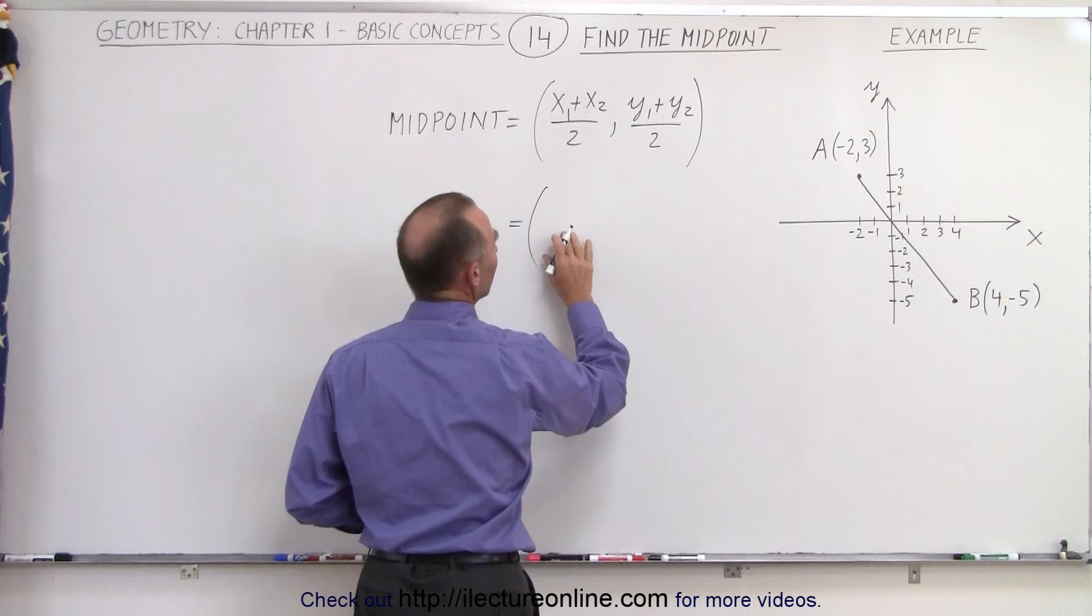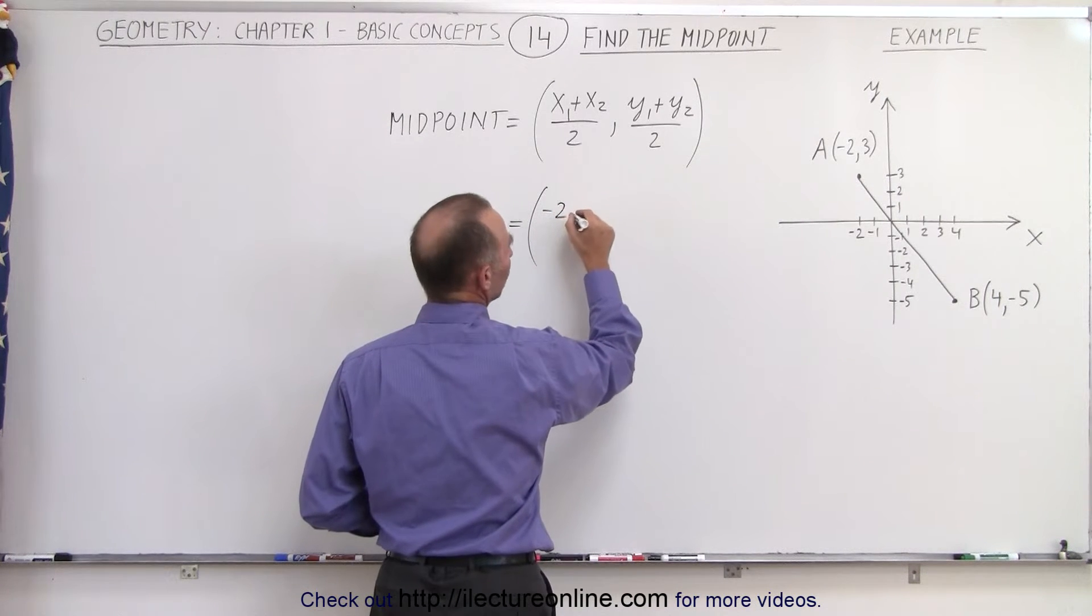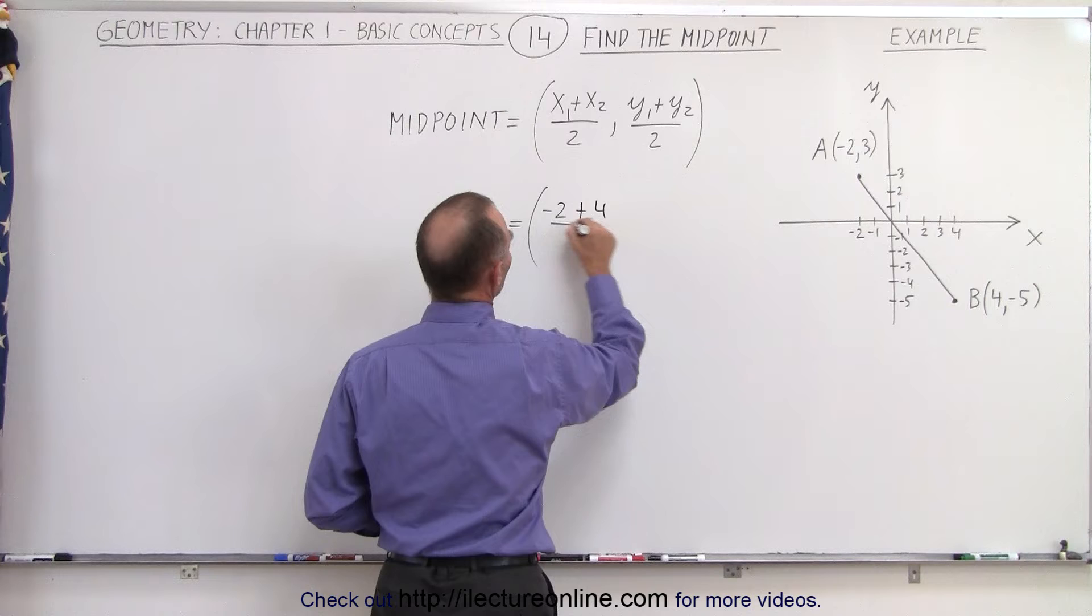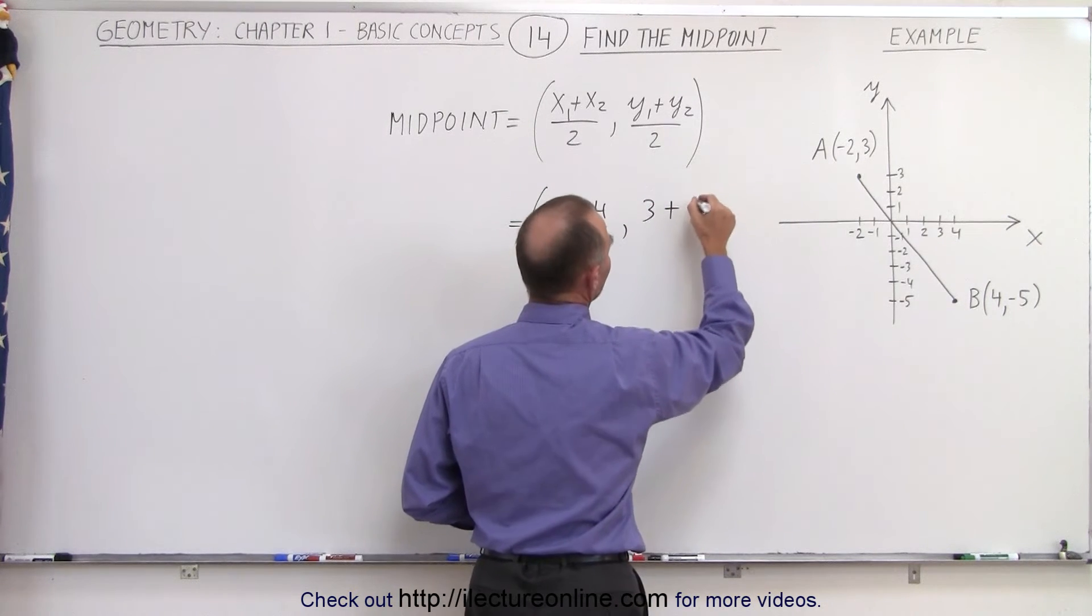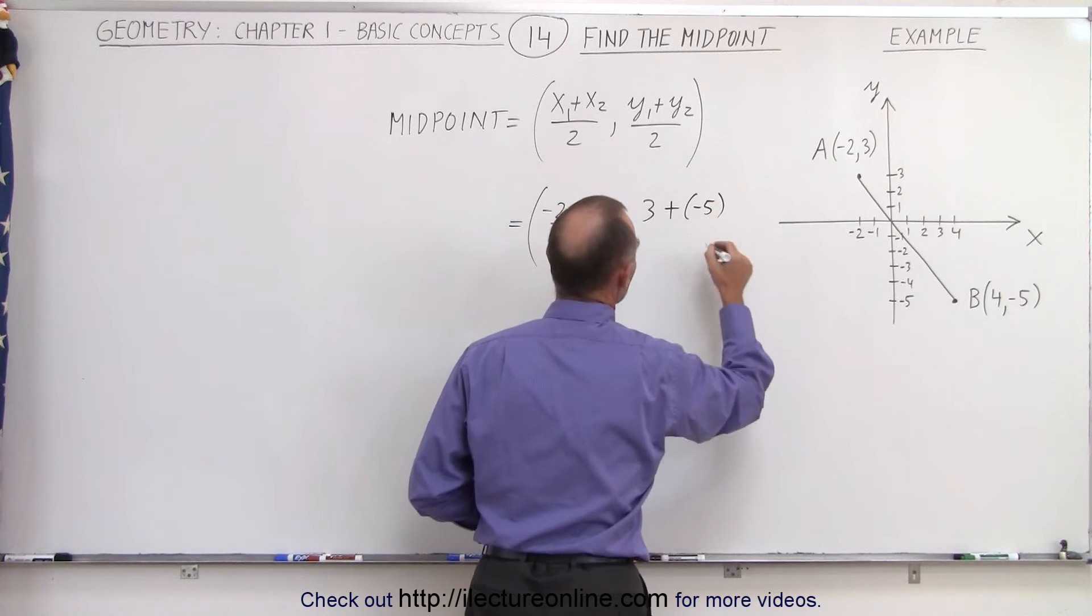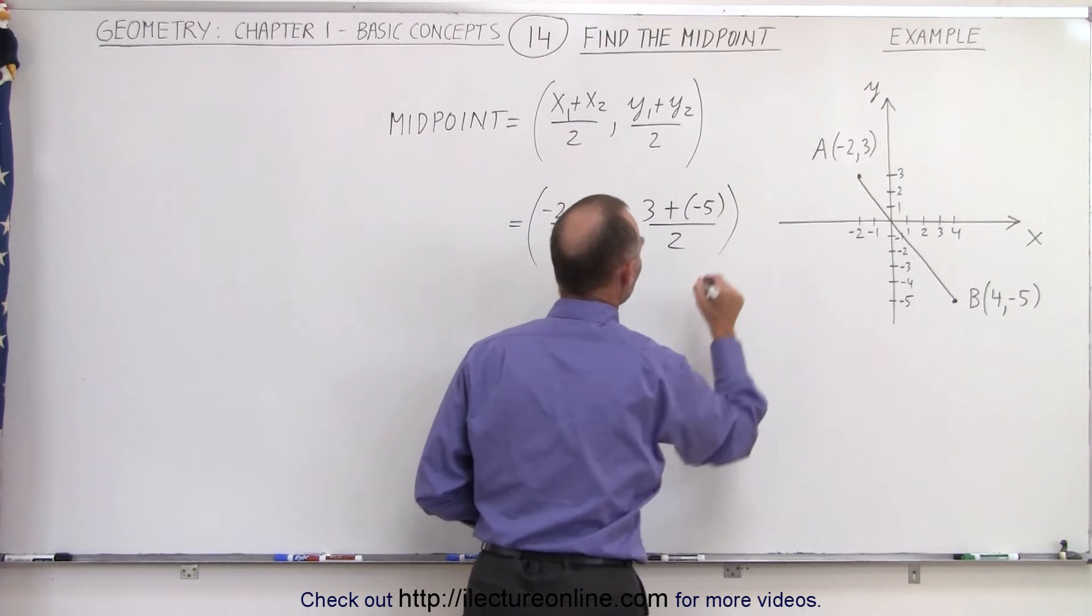So that means we're going to have minus 2 plus 4 divided by 2 and for the y coordinate, we take 3 plus a negative 5 and of course, that also needs to be divided by 2.